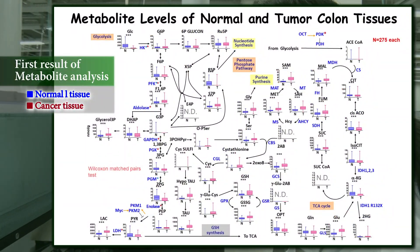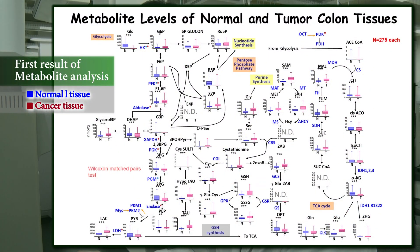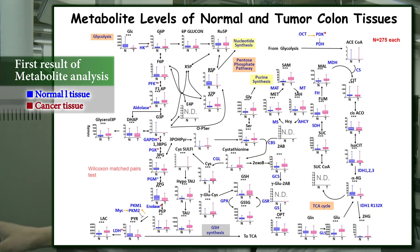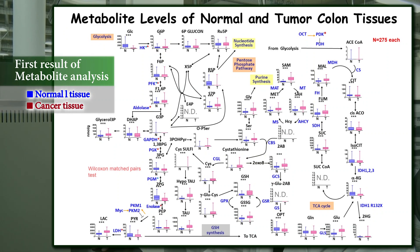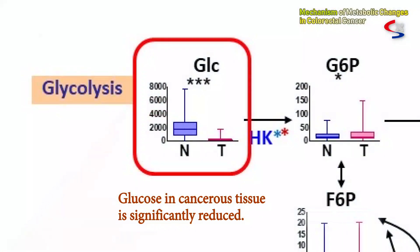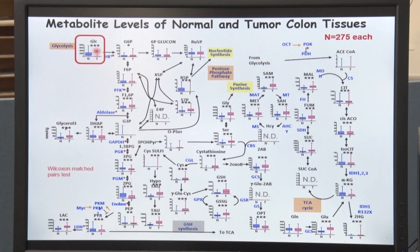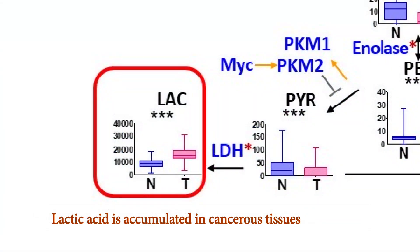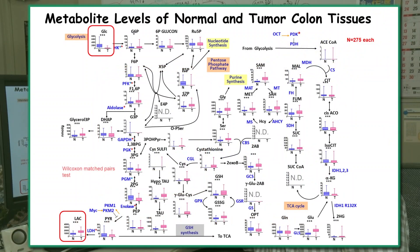This is the first result of analysis. Normal tissue is shown in blue and metabolic substances in cancerous tissue in red. Looking at the glucose in the glycolytic pathway, we can see that the level of glucose in cancerous tissue is significantly reduced. On the contrary, there is an accumulation of lactic acid, the final product of glycolysis, due to cancerous tissues showing high rates of glycolysis even in human colorectal cancer tissue, just as Warburg stated.